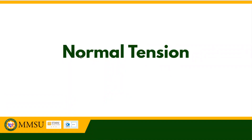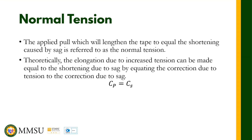Welcome to another episode of our lesson on fundamentals of surveying. We are still on the measurement of horizontal distance, and for this video we are going to talk about normal tension — this is still under taping. Normal tension refers to when the applied pull which will lengthen the tape will equal the shortening caused by sag. So theoretically we are going to equate the correction due to pull and the correction due to sag to come up with the normal tension equation.